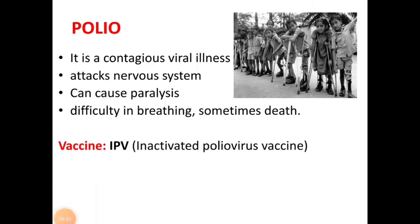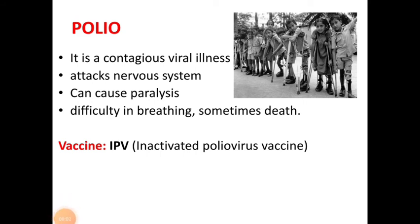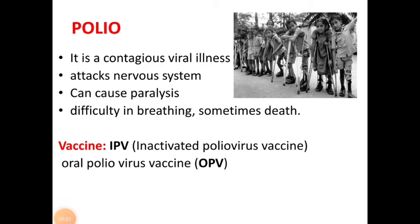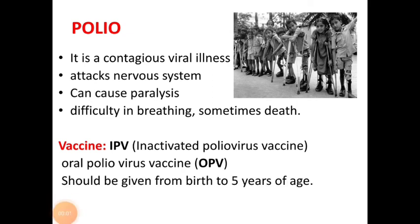Polio is prevented through the vaccine called IPV, that is inactivated polio virus vaccine, or OPV, oral polio vaccine. IPV is given as an injection in the leg or arm depending on the patient's age, whereas OPV is given orally to the child in four doses as recommended. These vaccines should be given from birth to five years of age.